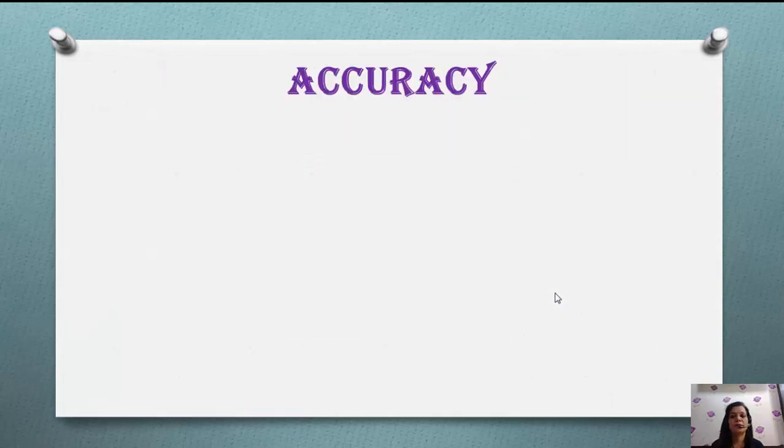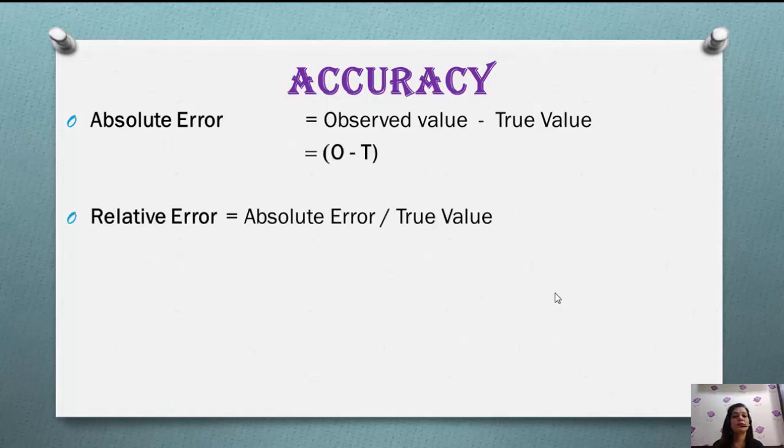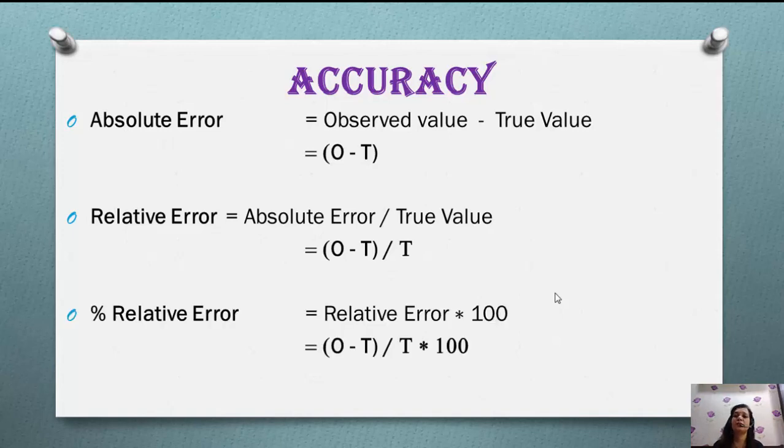Accuracy can be expressed in simple terms as absolute error, which is the difference between observed value and true value. Relative error you can calculate with absolute error divided by true value. Relative error can be expressed in terms of percentage or parts per thousand by multiplying by hundred or thousand. Accuracy is always expressed with regard to sign.